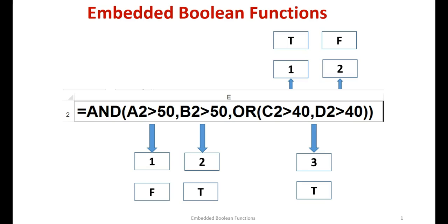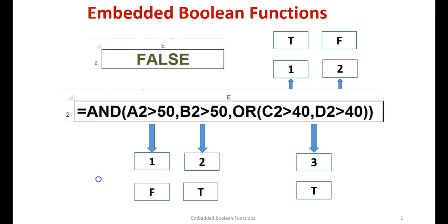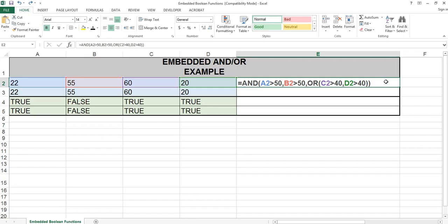The second argument, D2 greater than 40, evaluates to false. Because we have one true argument in the OR function, the entire OR function evaluates to true. So in the AND function, the first argument evaluated to false, the second to true, and the third to true. In the AND function, if we have at least one false, the entire function evaluates to false.